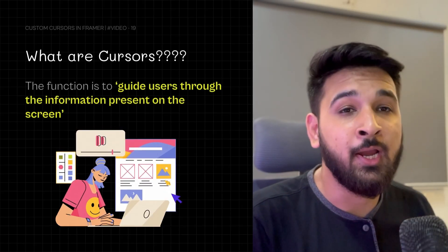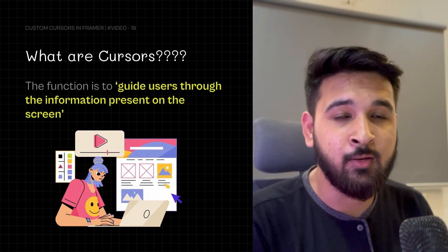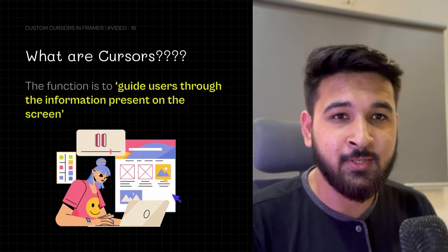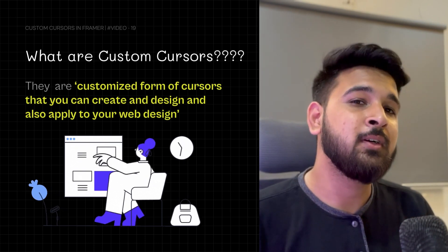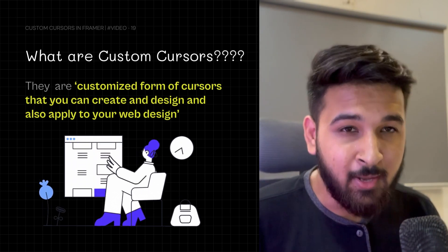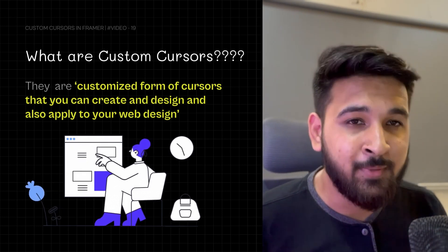So now let's talk about cursors. What is the primary function of a cursor? The primary function of a cursor is to guide users to the information present on the screen or on the interface they're interacting with. So what do we mean by custom cursors? As the name suggests, custom cursors are basically customized cursors that you can design and apply to your web design.